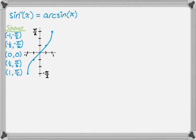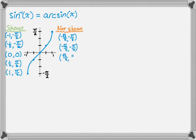The values not shown on the graph are the ones where the x-coordinate is irrational but you still know the value: negative radical 3 over 2 comma negative pi over 3, negative radical 2 over 2 comma negative pi over 4, and then the positive versions of those. They don't get highlighted on the graph but they're definitely there. So that's the actual graph of arc sine.